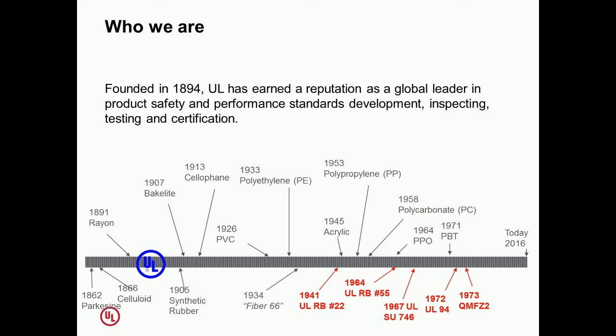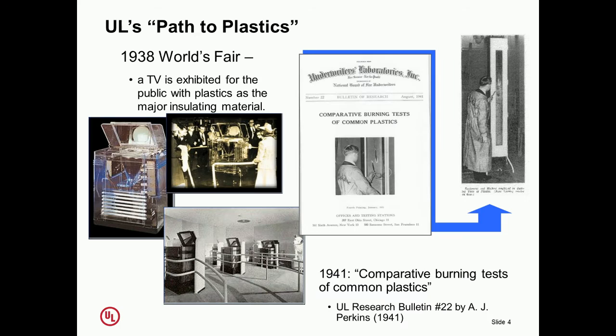Our background in standards goes way back as plastics and polymers started to be developed. This isn't just UL, but the development of standards goes back to when plastics were developed. Our first standards were back in about 1941 when we started to talk about different types of evaluations to show materials would maintain their properties. They kept advancing as polymer development advanced, up through and including today.